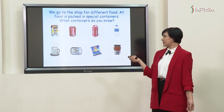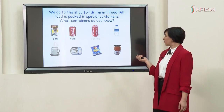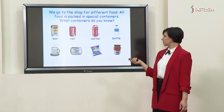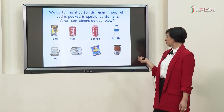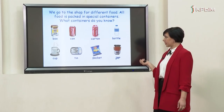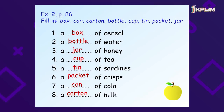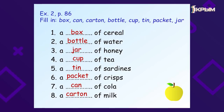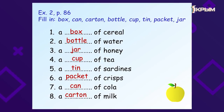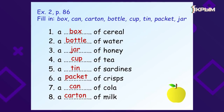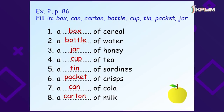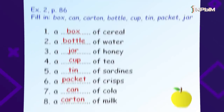We go to the shop for different food. All food is packed in containers. What containers do you know? Let's remember: box, can, carton, bottle, cup, tin, packet, jar. Now let's practice. Fill in: a box of cereal, a bottle of water, a jar of honey, a cup of tea, a tin of sardines, a packet of crisps, a can of cola, a carton of milk. Right you are.